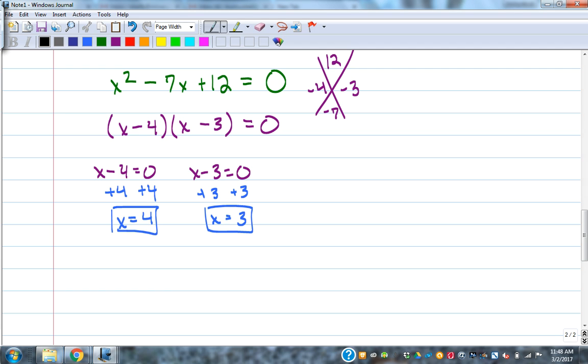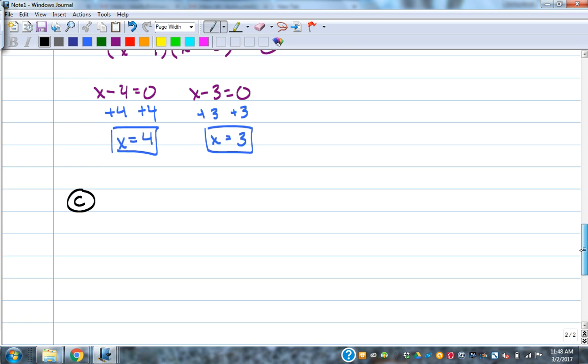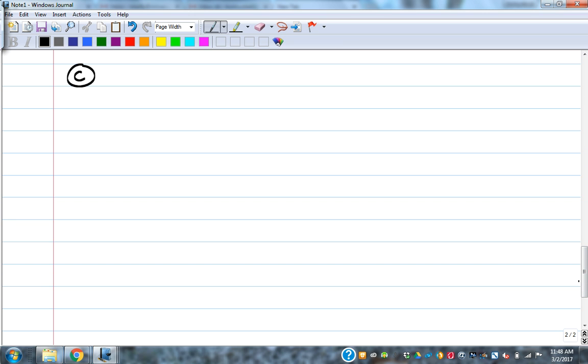Now what do I do with each of those factors? Last thing. Make them equal zero and solve. I'm going to add 4. So X equals positive 4. X equals positive 3. Alright. Not bad. Once you get the factoring done, the solving is the easy part. That's the part that you should just zip through. The factoring is the tougher part.